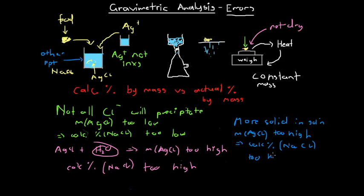In each of these cases, the way we figure out the effect of an error is by first looking at the immediate consequence: too little silver chloride, extra mass from moisture, or extra precipitate. We then carry that immediate consequence through the thought process of gravimetric analysis to determine the ultimate effect on our calculated percentage by mass. We need to go through this methodically and step by step to see how these errors affect our calculations.